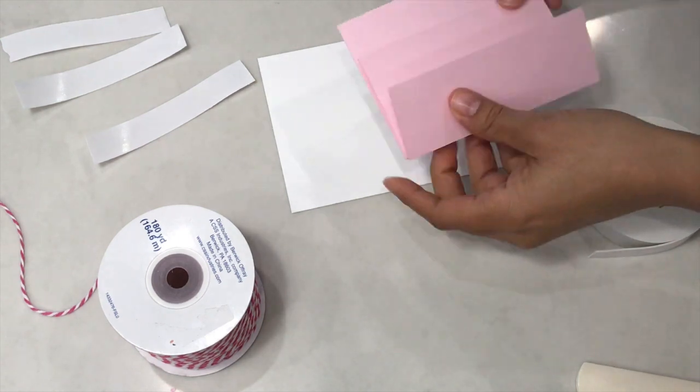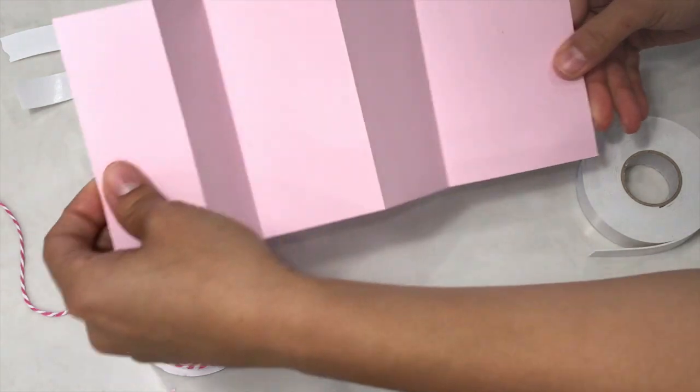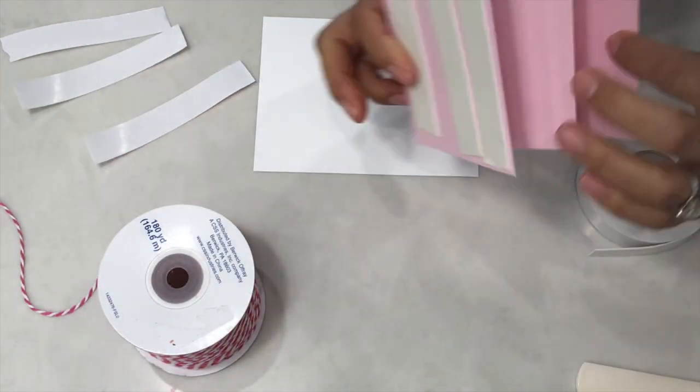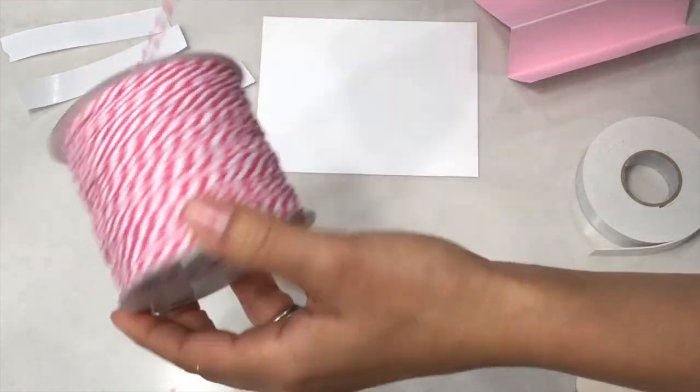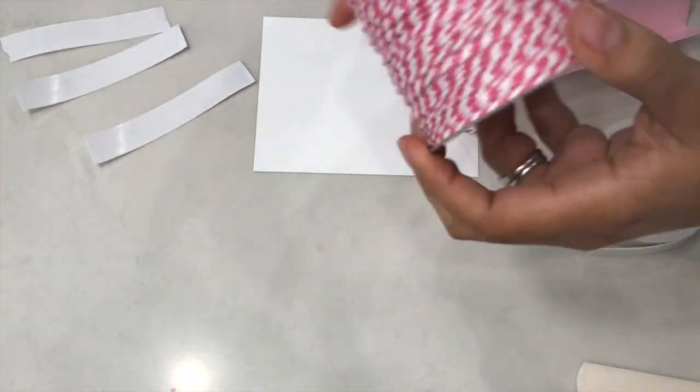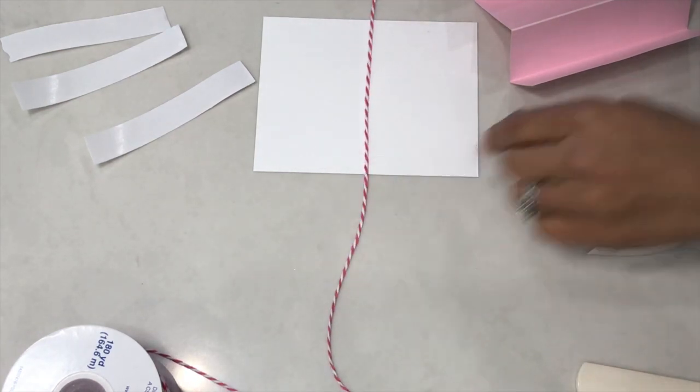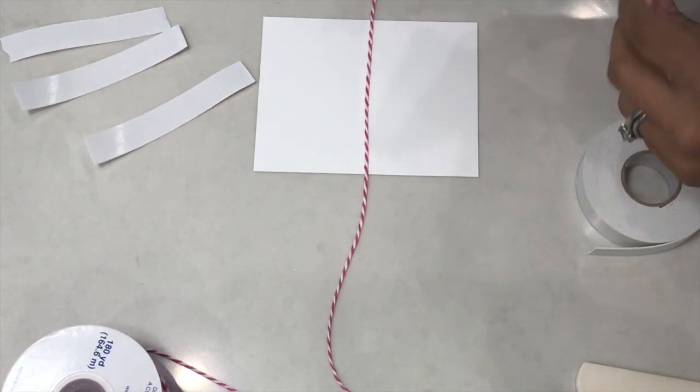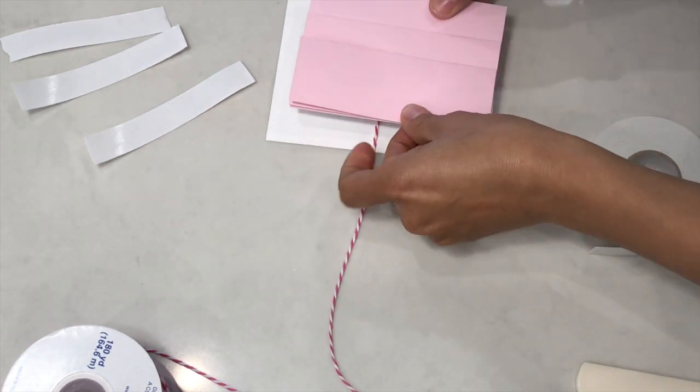Before we adhere the base down, make sure your card pops out like this, not like that. I'm going to cut some twine. Make sure it's long enough so that you can tie a bow. I'm just going to lay it flat like that and then adhere this down. Make sure that it's centered.